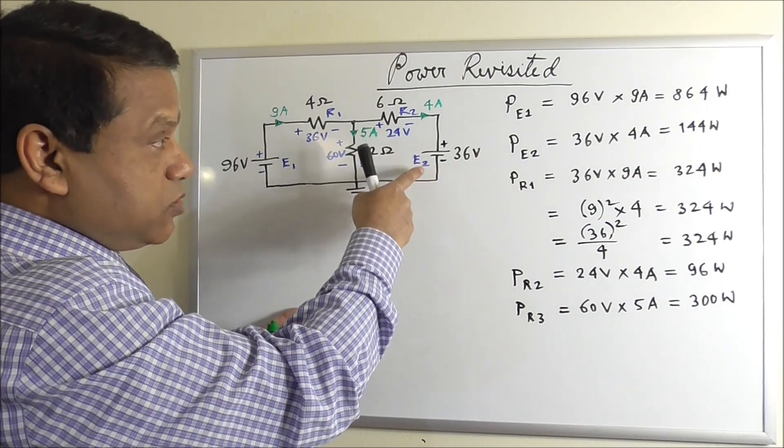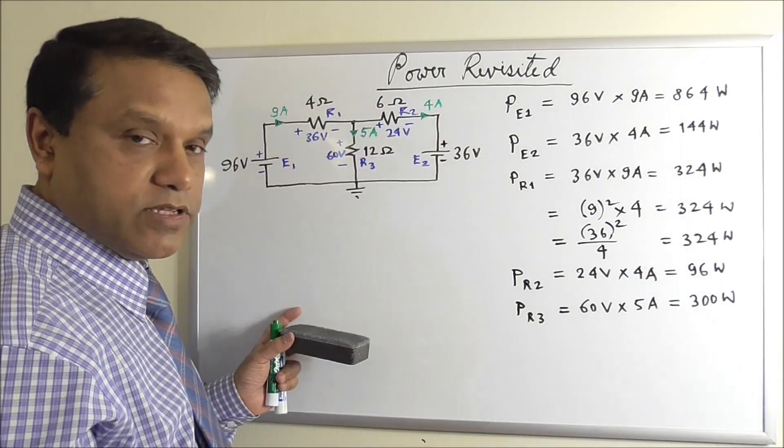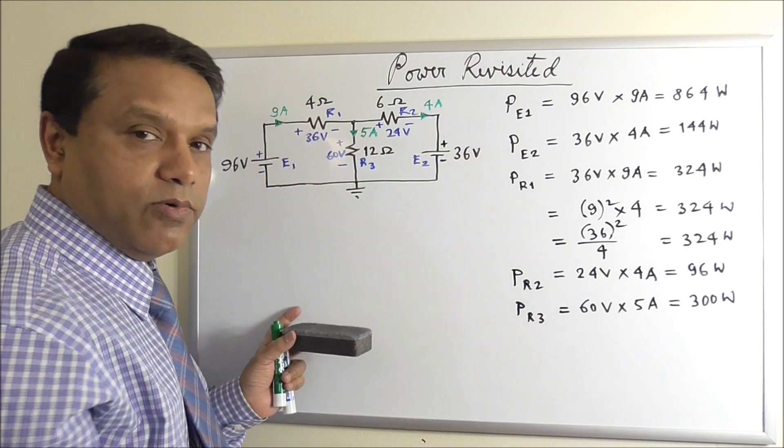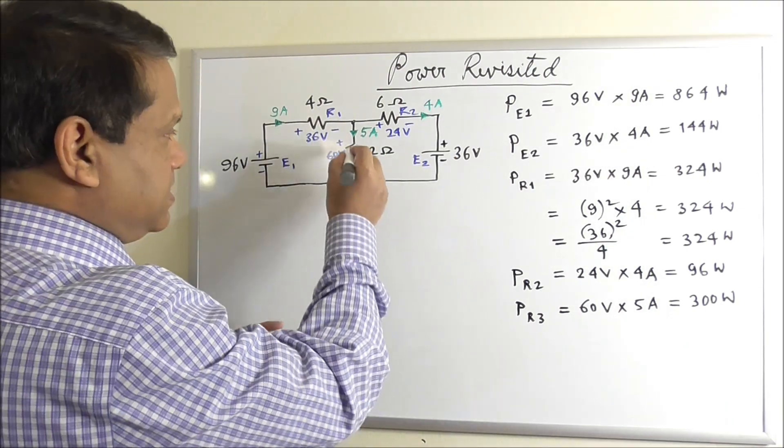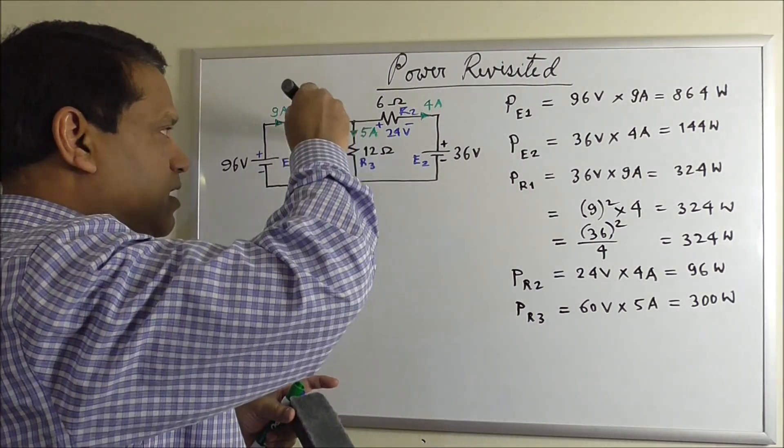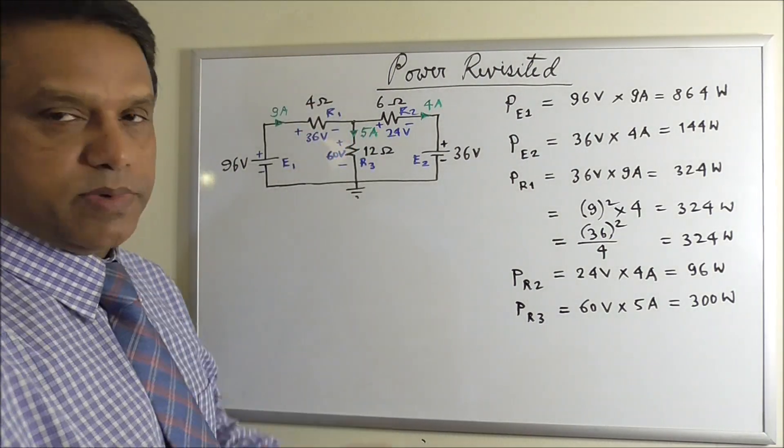Even if this is a source, current is going into the higher voltage side and coming out of the lower voltage side. This voltage source is actually consuming power. And similarly here, current is going to the higher voltage side. So this is consuming power.